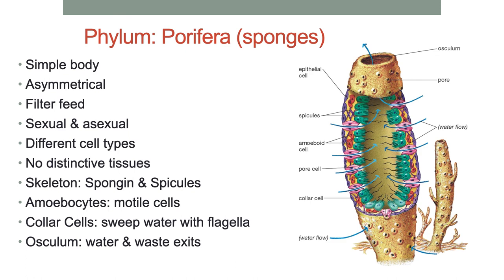They also have amoeboid cells — sometimes called amoebocytes — in the skeleton that can move through it, which is why we say some of their cells move quite a bit even though the sponge itself doesn't. They have a skeleton made up of soft spongin and harder parts called spicules. That's what makes up what you'd call a sponge if you picked up a dried dead one at the beach — that's just their skeleton; the living creature is no longer in there.